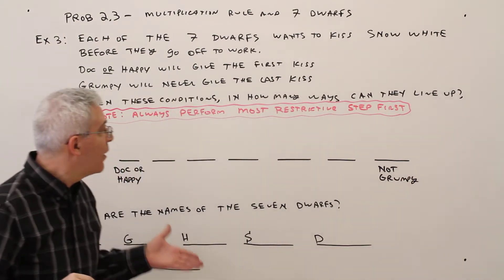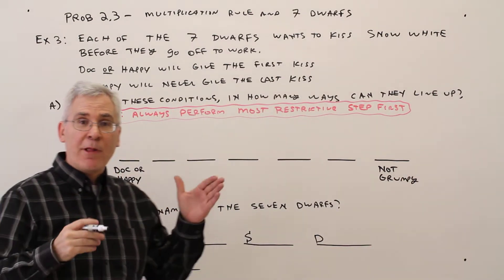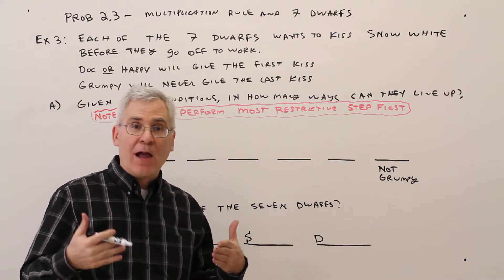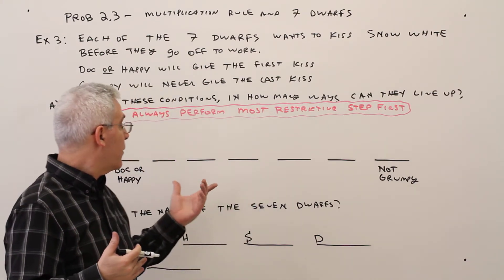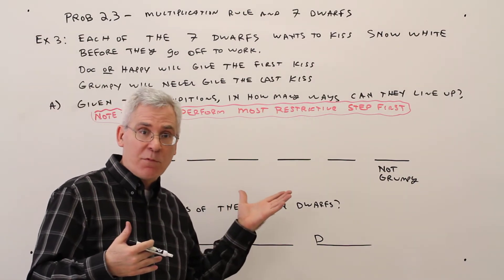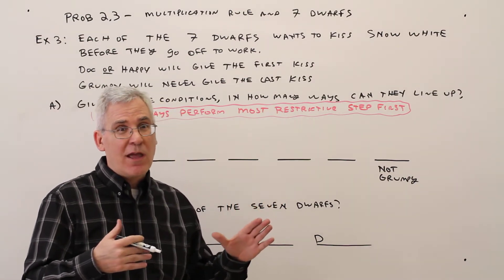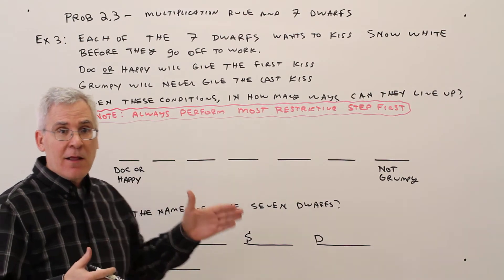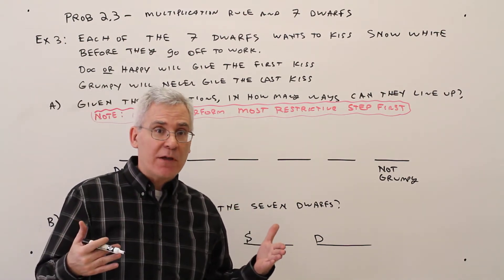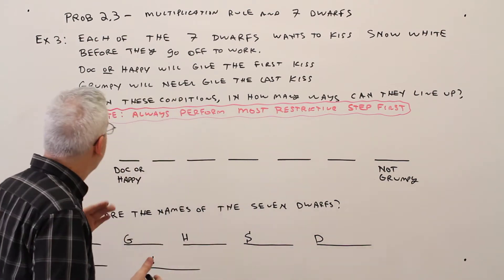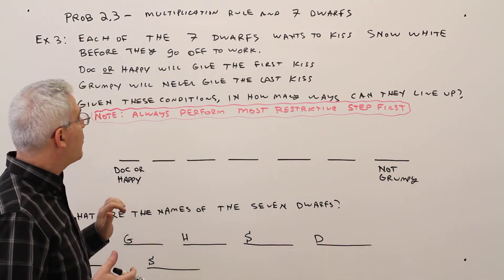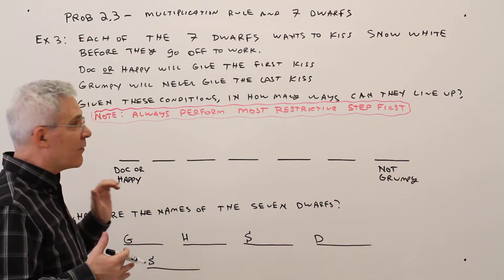Okay, it's important to realize that when you're placing physical people or objects, that's really like no repetition. You can't put a person in two different spots at the same time. So again, it's implied that when we're arranging physical objects or people, that you can't have repetition. Okay, so again, always perform the most restrictive step first.